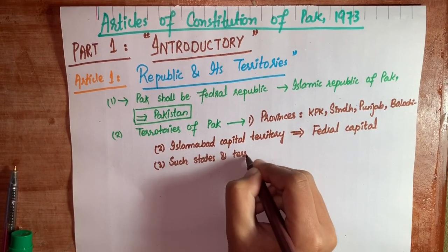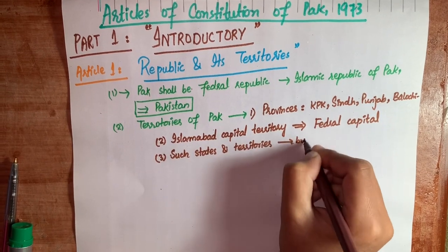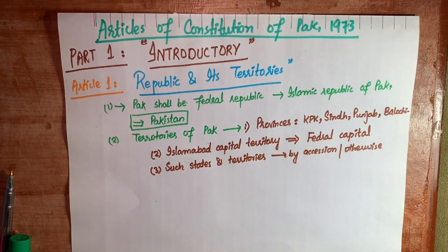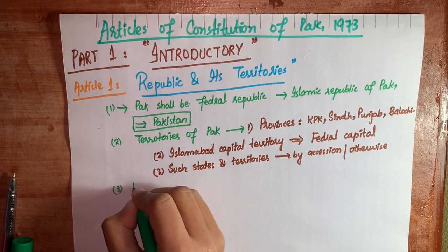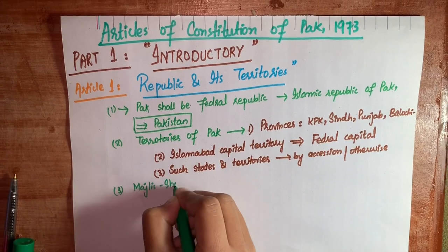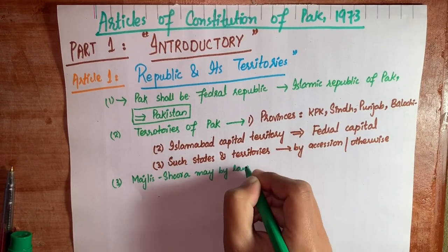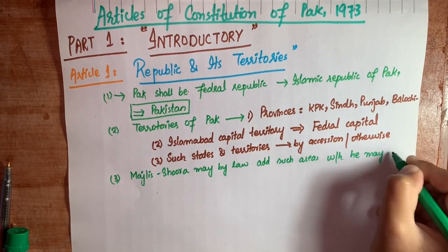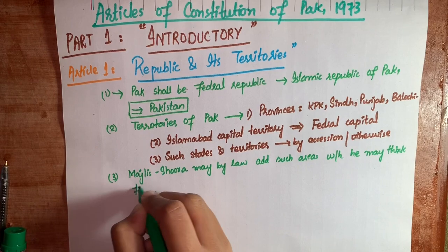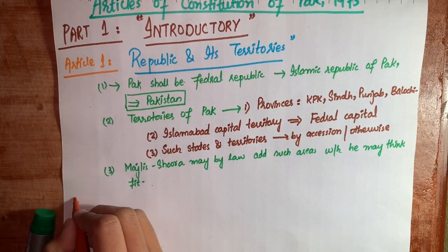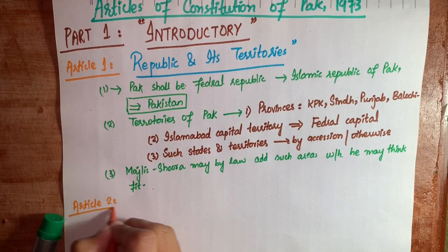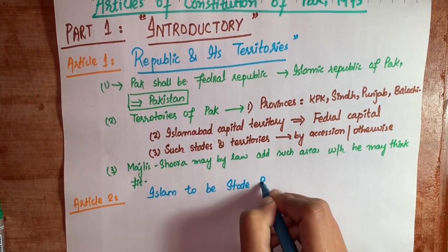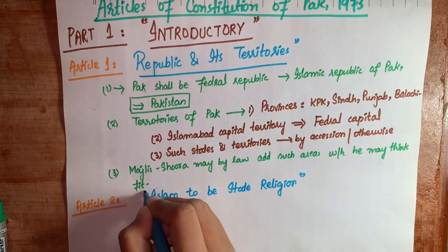Part C means such states and territories as are or may be included in Pakistan whether by accession or otherwise — yani woh territories jo Pakistan mein shamil ki jayengi. Clause 3 says that the Majlis-e-Shoora (Parliament) may by law admit into the federation new states and areas on such terms and conditions as it may think fit.